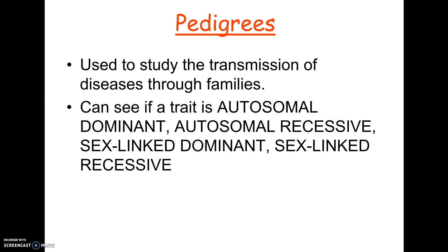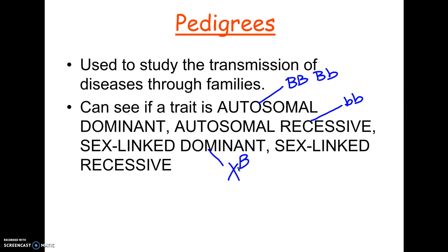There are four possible kinds of traits, and your job might be to identify what kind of trait it is. Is the trait autosomal dominant, meaning a person that has the trait is BB or Bb? Is the trait autosomal recessive, where the person carrying the trait is bb? Is the trait sex-linked dominant, where X^B represents the trait, or is the trait sex-linked recessive?